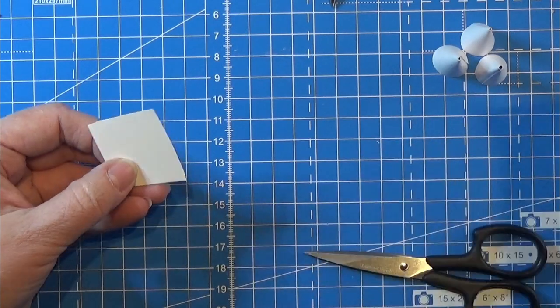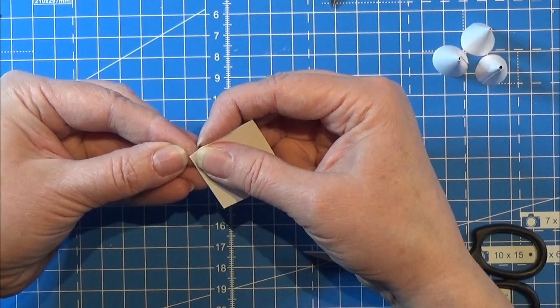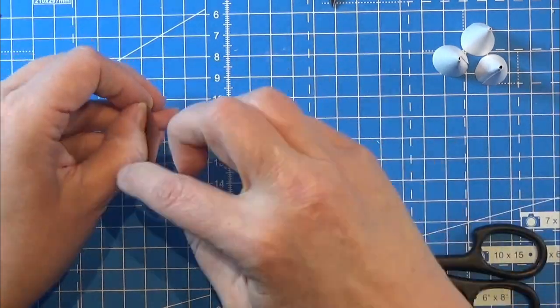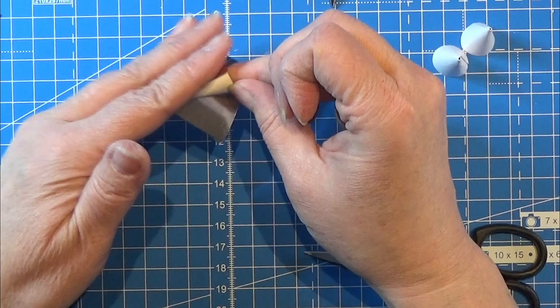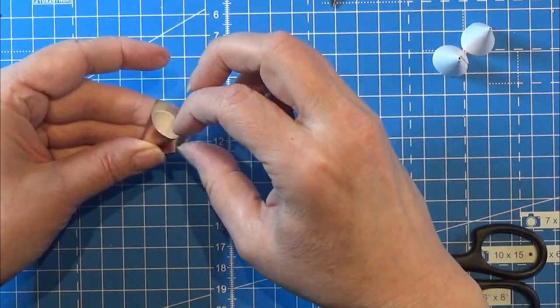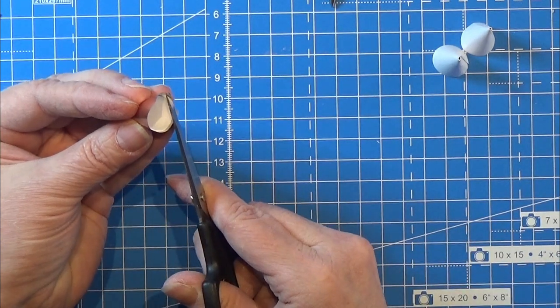I am cutting out a piece of this paper that is big enough for the hat, and then I am taking the backing off and I'm carefully wrapping my hat in this paper. Then I can always cut off the excess here at the bottom.